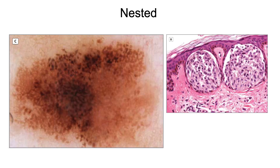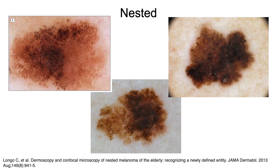The nested melanoma of the elderly typically appears on the trunk and lower limbs of elderly people, as suggested by the name. It might be considered as a subgroup of nevoid melanoma. However, it deserves distinct classification because of its peculiar histological and dermoscopic appearance. Large superficial nests of atypical melanocytes are indeed a clue of nested melanoma, corresponding to large irregular globules on dermoscopy. Specifically, two dermoscopic patterns were described: multicomponent and globular asymmetric.